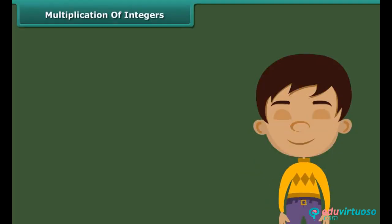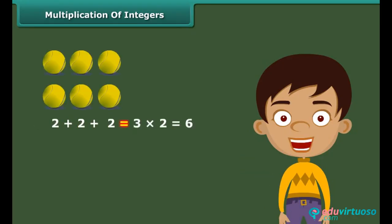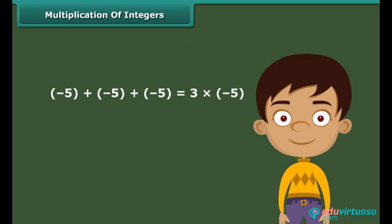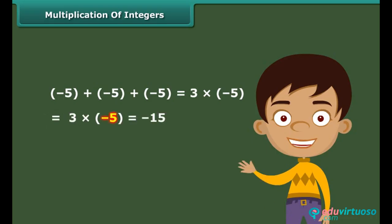We know that multiplication of whole numbers is repeated addition. For example, 2 plus 2 plus 2 equals 3 times 2 which equals 6. Similarly, multiplication of integers is also repeated addition. For example, (−5) + (−5) + (−5) equals 3 times (−5). Therefore 3 times (−5) equals −15.